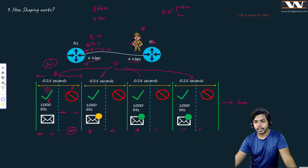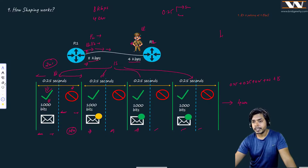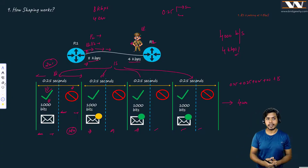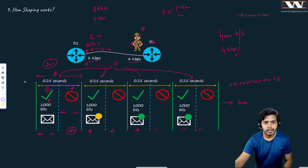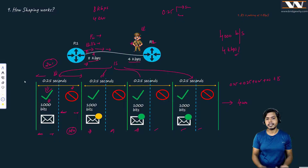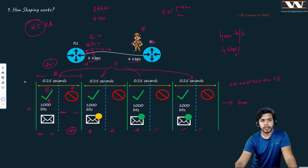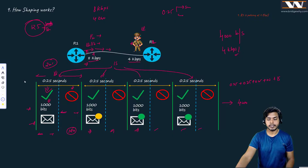So over the four intervals of 0.25 seconds each — totaling one second — I am now sending 4000 bits per second, or 4 kilobits per second. What this means is: when I can send only 1000 bits per interval, I can send only one packet of 125 bytes (1000 bits) per interval instead of two. This is what shaping does behind the scenes — the interface sends for some time and is idle for some time.